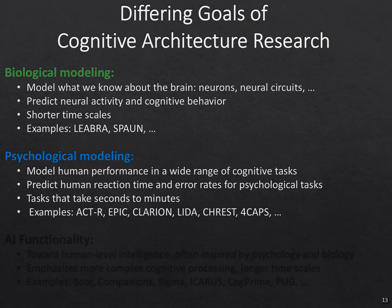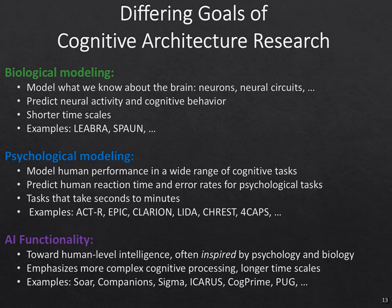The third area I'll highlight are systems built to create AI systems. Instead of building AI systems for single tasks, this is trying to take the idea of what humans have and create AI systems that can do many different tasks — moving towards human-level intelligence. These are usually inspired by psychology and biology, but often will not try to make behavioral predictions such as timing and error rates. They often make more emphasis on complex cognition such as planning and problem solving at longer timescales. My own system SOAR is an example, as well as Companions, Sigma, ICARUS, COG-Prime, and a few others.